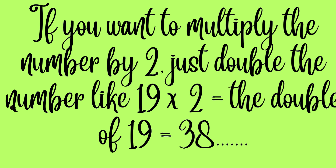If you want to multiply a number by 2, just double the number. Like 19 times 2 — the double of 19 is 38.